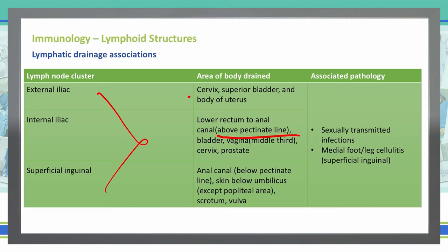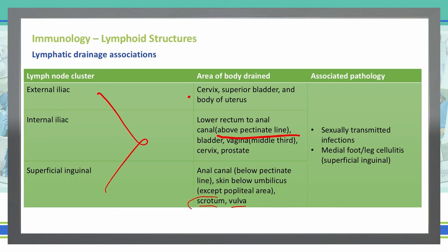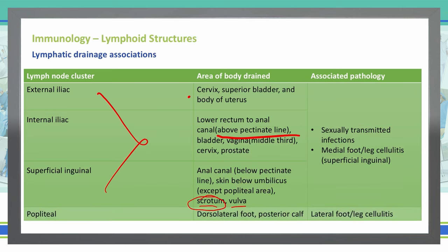The superficial inguinal drains the anal canal below the pectinate line, the skin below the umbilicus (except the popliteal area), the scrotum, and the vulva. Note that the testes reside in the scrotum but are not drained by the inguinal lymph nodes — the testes drain to the para-aortic, while the scrotum drains to the superficial inguinal.